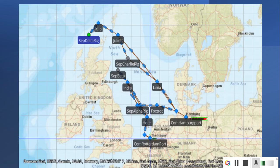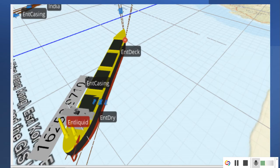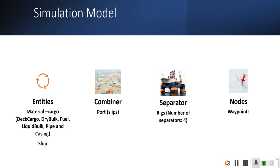This is the actual simulation model. The points are inputted as the latitude and longitude of the actual map. Based on that, the whole model is constructed. From point A to point B, the distance is actual distance which is the actual real world distance. In the simulation model there are entities, combiners, separators, and nodes.